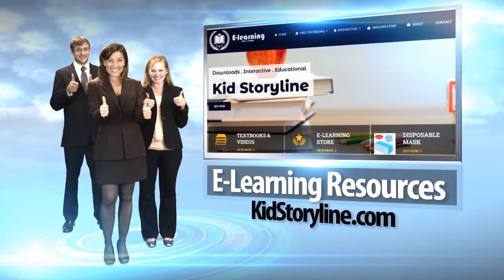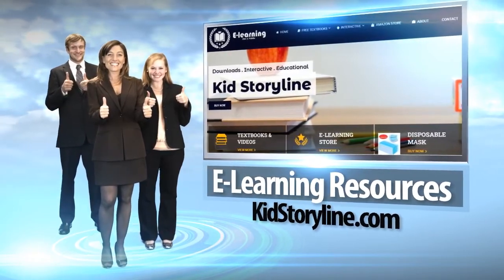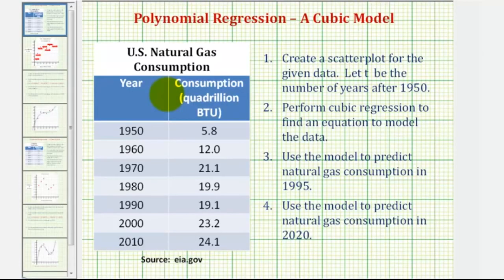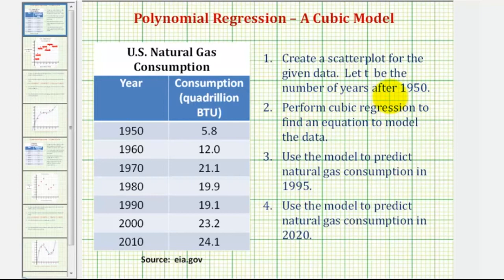Welcome to an example of cubic regression on the TI-84 graphing calculator. Here we're given data on U.S. natural gas consumption, where we have paired data with the year and the consumption in quadrillion BTUs. We're asked to create a scatterplot for the given data, letting T be the number of years after 1950. Then we'll perform regression and make predictions using our model for 1995 and 2020.